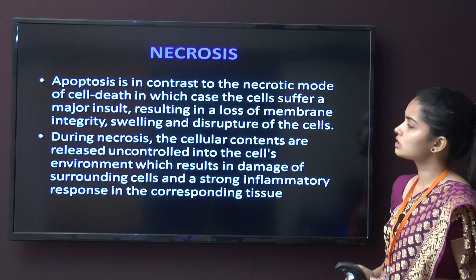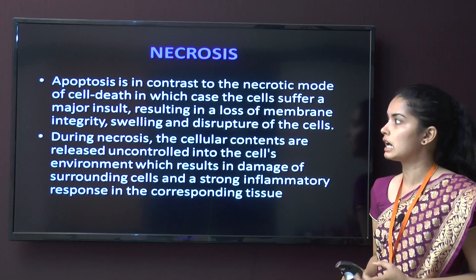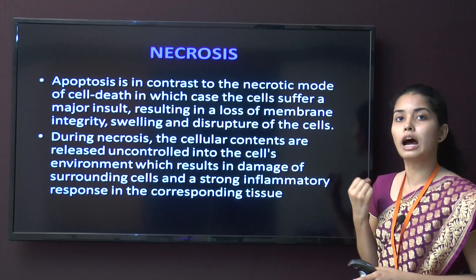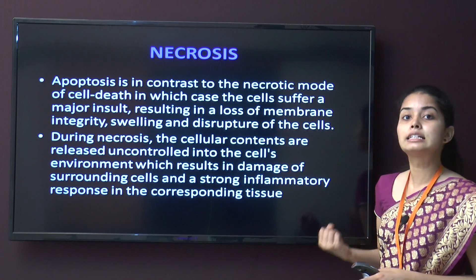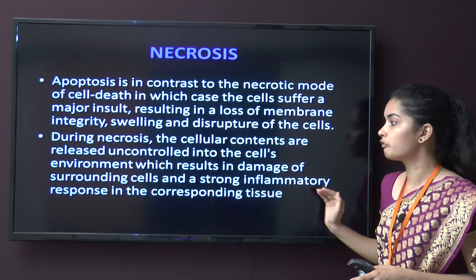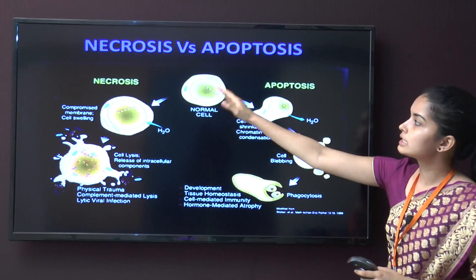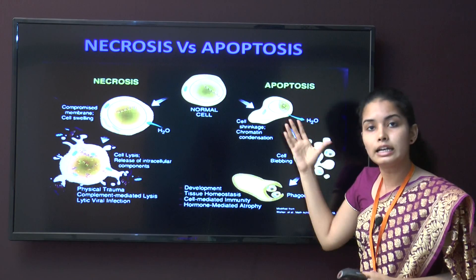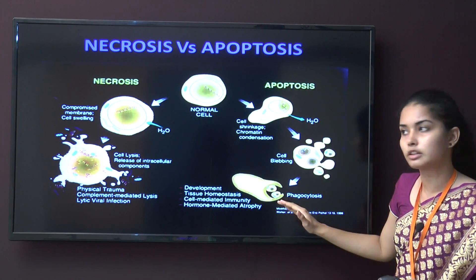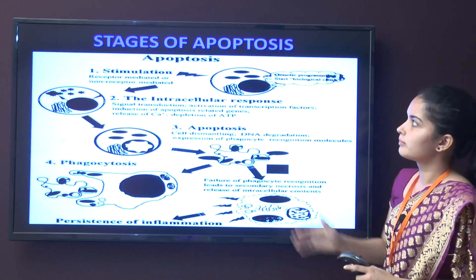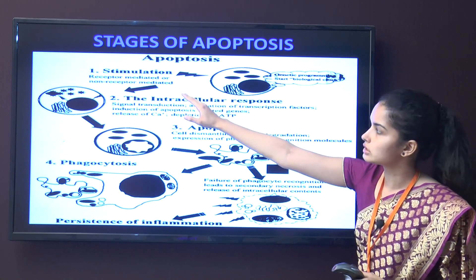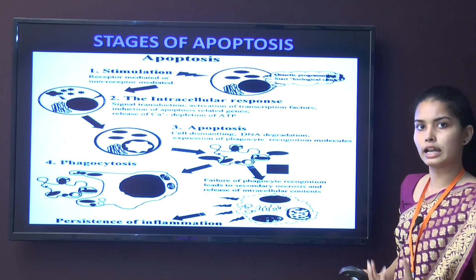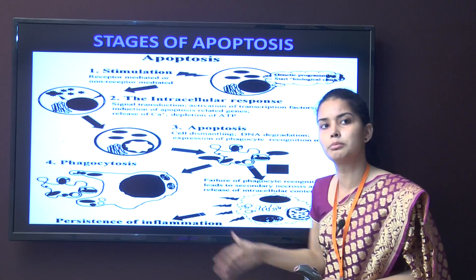In contrast to apoptosis, necrosis is a mode of cell death in which the cell suffers a major insult resulting in loss of membrane integrity, swelling, and disruption of the cell. During necrosis, cellular contents are released uncontrolled into the environment, causing damage to surrounding cells and a strong inflammatory response. In the apoptosis diagram, water is released out of the cell, cell blebbing occurs, and phagocytosis follows. The stages of apoptosis include: stimulation, intracellular receptor activation, cell collapse, and absorption of waste materials by neighboring cells.